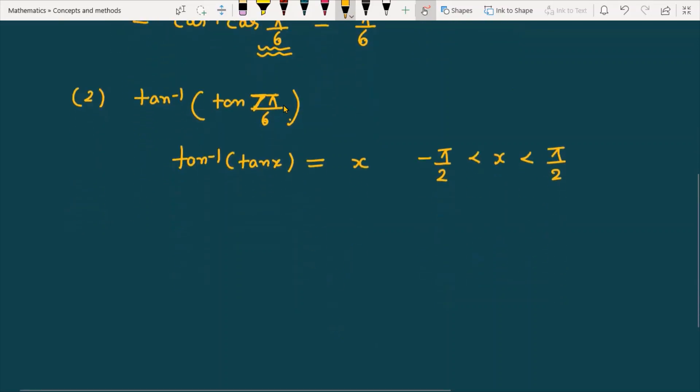You can see the question provided is tan inverse tangent of 7π by 6. First of all, what should we do? We are going to write tan inverse tangent of π plus π by 6.